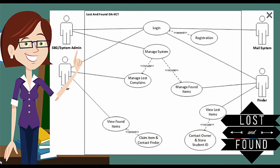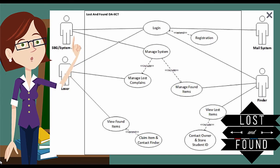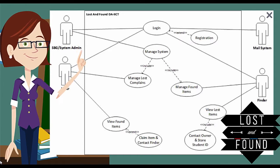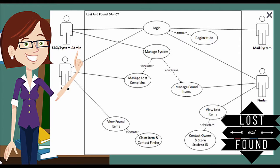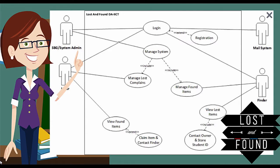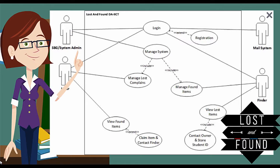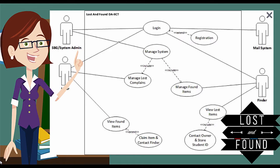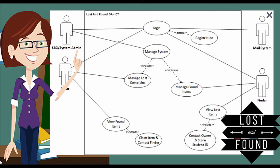We have four major actors. First is SBG, the student body government of the whole institution — this is the system admin managing the lost and found system. Second is the mail system, an external application we communicate with to authenticate students. Third is the loser and fourth is the finder. A student at any particular time will be either a loser or a finder, which is why we separated both.